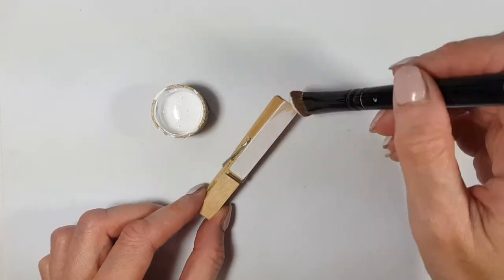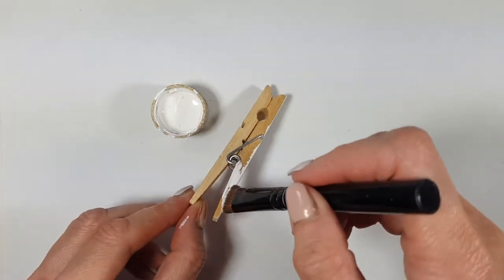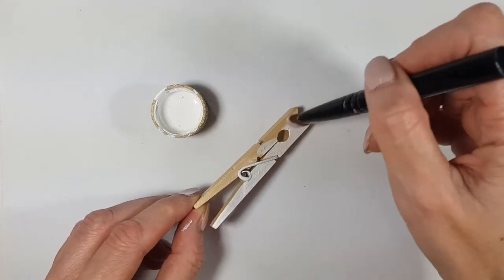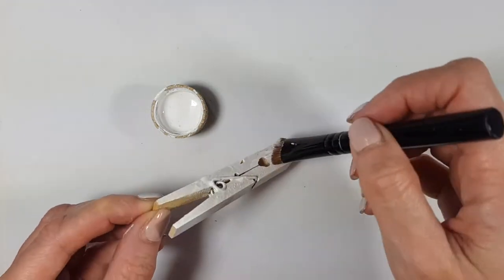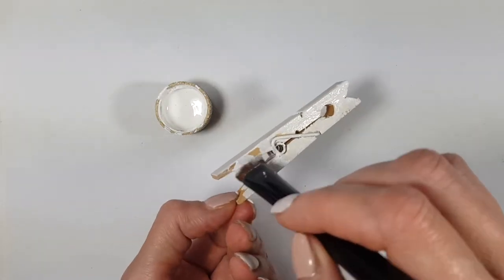I'm going to be using some wooden clips or clothespins, some acrylic white paint and my brush. Paint the clothespin, giving it a few coats until it's covered, but I'm not going to be covering one side of it and inside because it's not going to be visible.